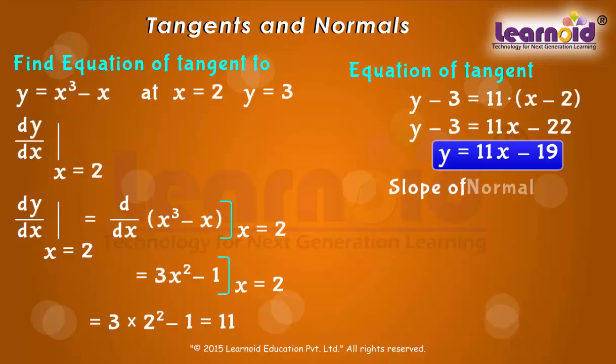The slope of normal to the curve at point (2, 3) is -1/11. Equation of normal at point (2, 3) is y - 3 = -1/11(x - 2).